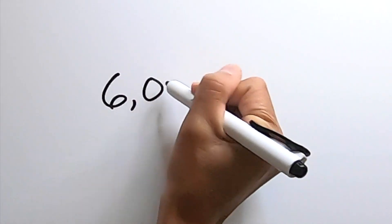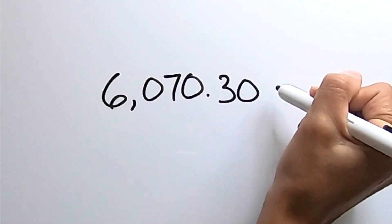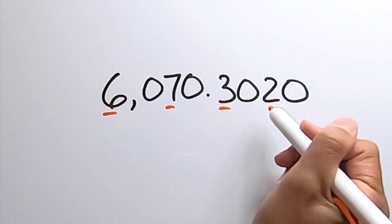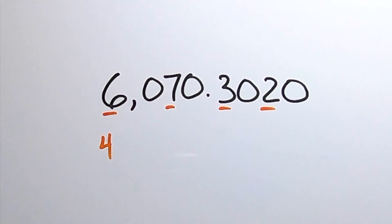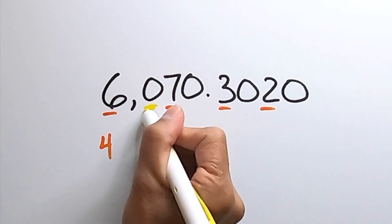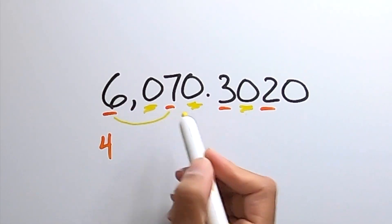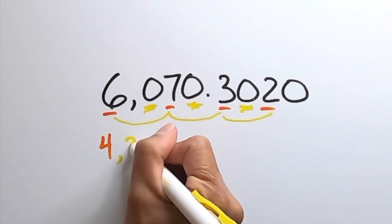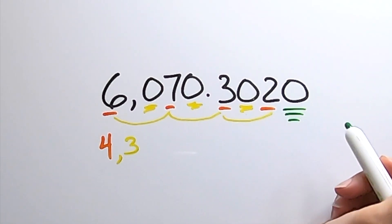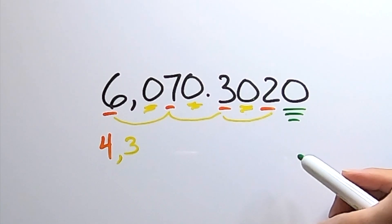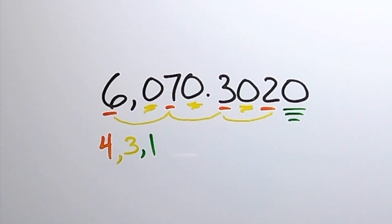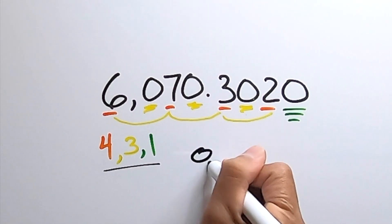Let's look at a big number — a whole number with a decimal. How about 6070.3020? How many sig figs does this number have? First, there are four non-zero numbers, so that's at least four sig figs. Then we have three zeros that are between non-zero numbers, so those are also significant figures — three more. And the zero at the end did not have to be written; they bothered to write it, which means it is indeed a significant figure — one more. So this number has a total of eight sig figs.